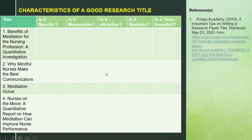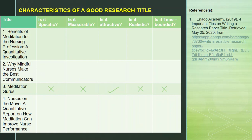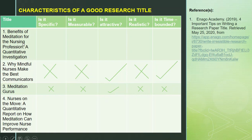Let us go back to the titles we evaluated. Starting with number 3: it is attractive because of the word 'gurus,' which brings interest to readers; however, it did not meet other characteristics. Number 2 appears like a literature title — it is not specific because there are no specific variables intended to measure, and thus not measurable. It is not realistic because it is not conclusive that nurses are the best communicators, though the title may appear trendy. For number 1, it has fewer words, and going back to the standards of 5 to 15 words, number 1 could be a good research title.